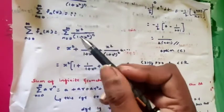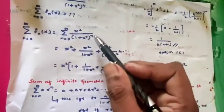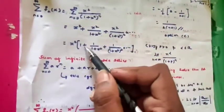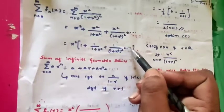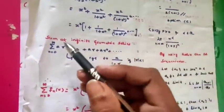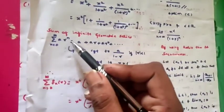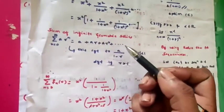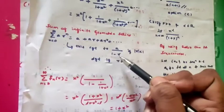For n = 0 we get x², for n = 1 we get x²/(1+x²), for n = 2 we get x²/(1+x²)², and so on. Taking x² common we get x² times [1 + 1/(1+x²) + 1/(1+x²)² + ...]. We know that the sum of infinite geometric series: summation n = 0 to infinity of a·r^n = a + ar + ar² + ... converges to a/(1-r).